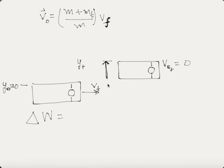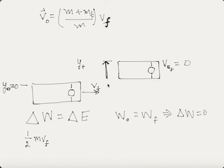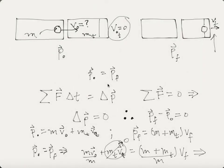The work-energy theorem states that delta E equals kinetic energy plus potential energy. Since we're working in a conservative field — gravity — the initial work equals the final work, so delta W equals zero. We write the kinetic energy equation for the final state, keeping 'final' connected to the final velocity from our momentum equation, since it's all part of the same experiment considered at different times.